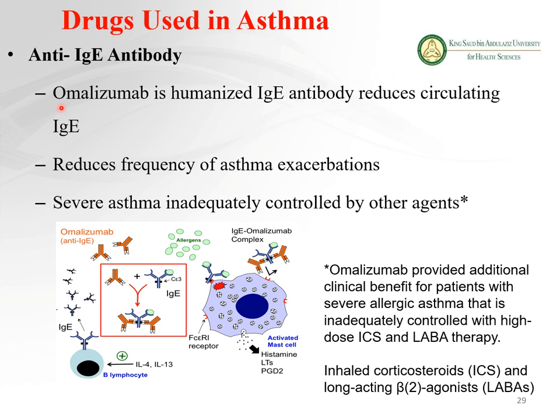IgE antibodies play a major role in inducing inflammation and inflammatory mediators. Omalizumab is a humanized anti-IgE antibody; reducing IgE reduces asthmatic exacerbations and decreases hypersensitivity reactions. It is used for severe asthma inadequately controlled by other agents.